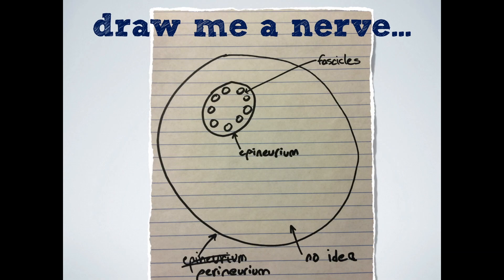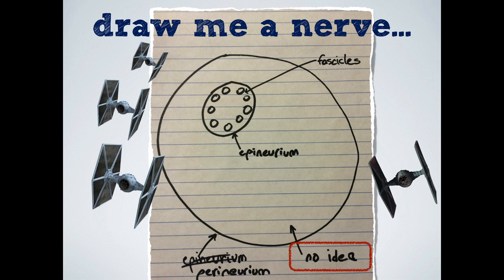When you ask a junior resident to draw a nerve, you get some interesting results. I love this drawing for several reasons. This person has got several of the keywords correct, if maybe not in the right location. They get the idea that there are fascicles within the nerve — I totally love the honesty. And I also like that this looks like the Death Star. This one is a keeper. But examples like this highlight that many of us lack a complete understanding of how nerves are put together.